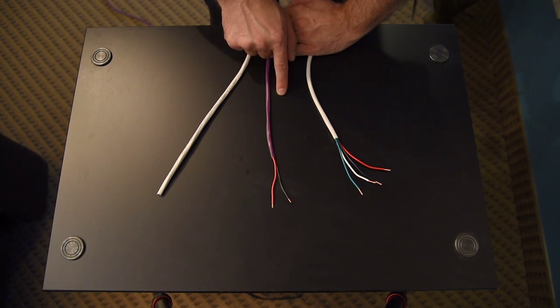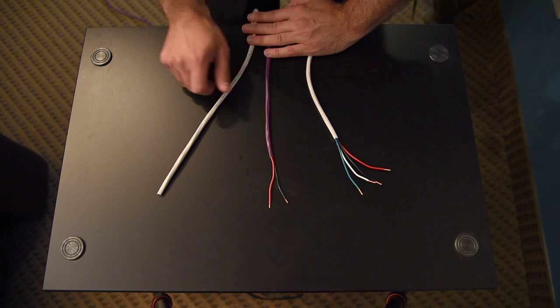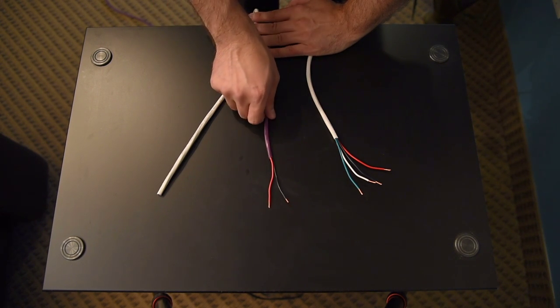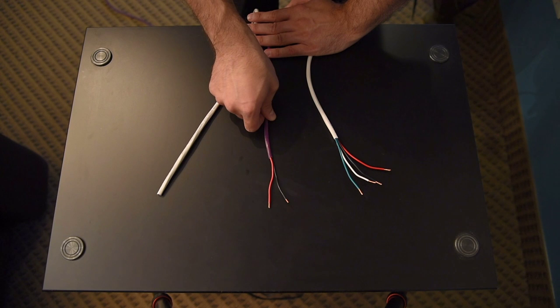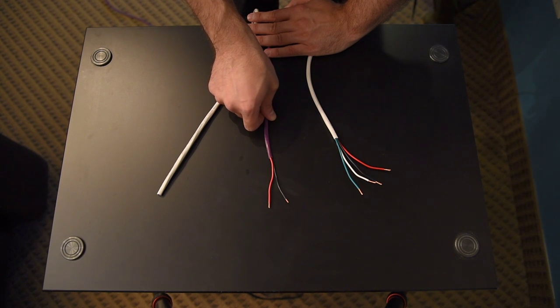And if you have a seven channel surround system, you would also have a back left and back right as well. So if you're using this two conductor cable, you would have seven of these cables in a seven channel surround system, or five cables in a five channel surround system.